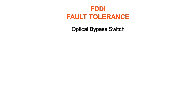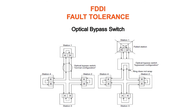An optical bypass switch provides continuous dual ring operation if a device on the dual ring fails. This is used both to prevent ring segmentation and to eliminate failed stations from the ring. The optical bypass switch performs this function using optical mirrors that pass light from the ring directly to the DAS device during normal operation. If a failure of the DAS device occurs, such as a power off, the optical bypass switch will pass the light through itself by using internal mirrors, and thereby will maintain the ring's integrity. The benefit of this capability is that the ring will not enter a wrap condition in case of a device failure.